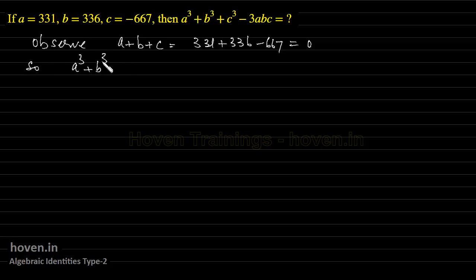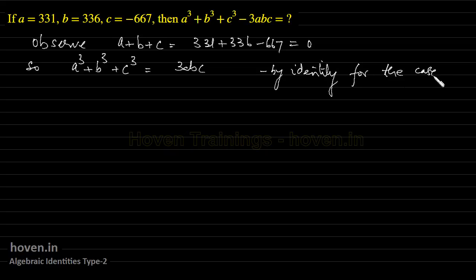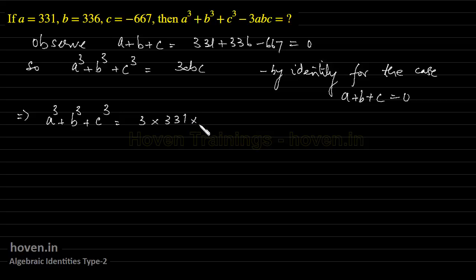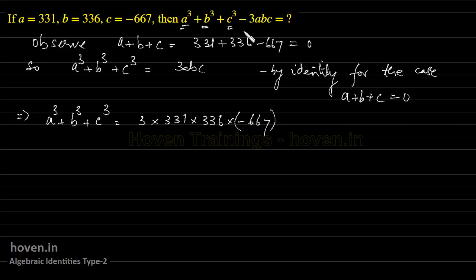By identity, for the case a plus b plus c equal to 0, a cubed plus b cubed plus c cubed will be equal to 3abc. So a cubed plus b cubed plus c cubed is equal to 3 into 331 into 336 into minus 667. Using the identity is definitely going to save time compared to cubing each number individually and then adding.